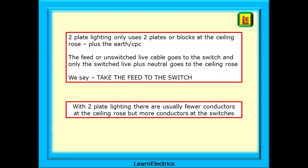Keep this in mind. Two-plate lighting only uses two plates or blocks at the ceiling rose, plus the earth or CPC. The feed cable, or unswitched live cable, goes to the switch, and only the switched live plus neutral goes to the ceiling rose. We say: take the feed to the switch. With two-plate lighting, there are usually fewer conductors at the ceiling rose, but more conductors at the switches.